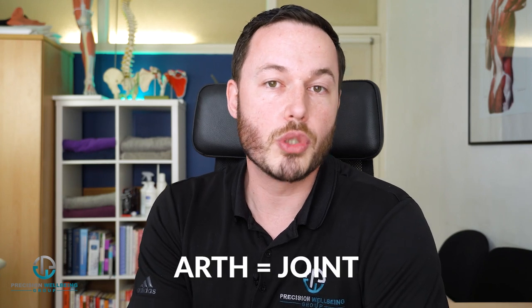The first thing we need to understand is what is arthritis? The best place to start is just by looking at the word itself. Anytime you see a word beginning with 'arth,' that essentially means something to do with joints — arthralgia, arthritis, arthroscopy and so on. And 'itis' is to do with inflammation — arthritis, tendinitis, bursitis and so on. So essentially, arthritis means inflammation of the joints.